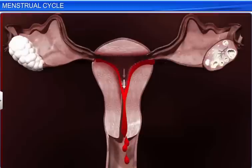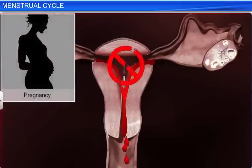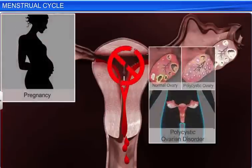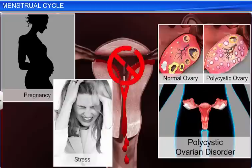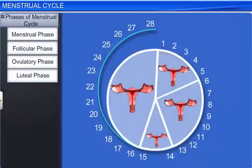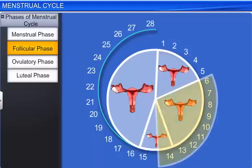Interestingly, the absence of menstruation indicates pregnancy, or ovarian disorders such as polycystic ovarian disorder, or even factors such as stress and ill health. The menstrual phase is followed by the follicular phase, which occurs between days 6 and 14 of the menstrual cycle.